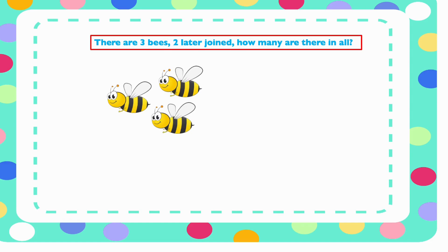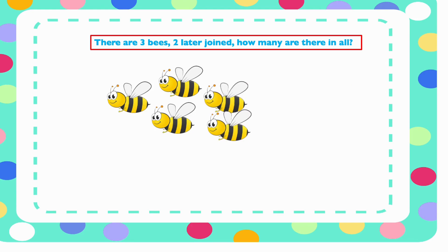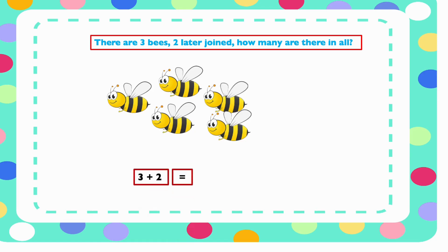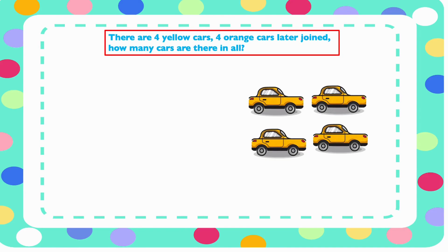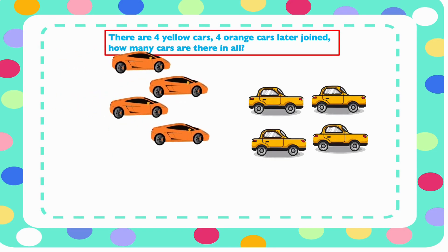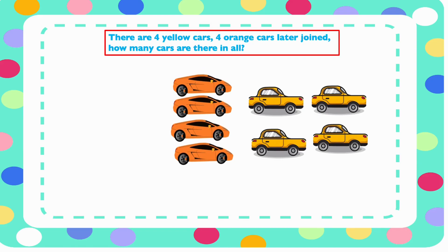There are three bees. Two more joined. How many are there in all? Let's count the bees together and find out: one, two, three, four, five. There are five bees all together, so three plus two is equal to five.